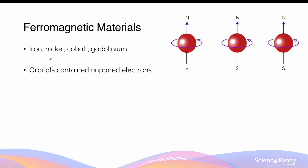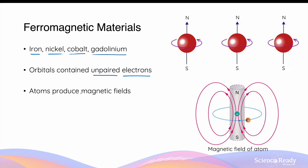In ferromagnetic materials — such as iron, nickel, cobalt, and gadolinium — the atoms contain orbitals with unpaired electrons. As a result, the magnetic fields produced by these unpaired electrons cause the atom to produce its own net magnetic field. You can think of the atom's magnetic field as the cumulative effect of the smaller magnetic fields produced by each of its unpaired electrons.